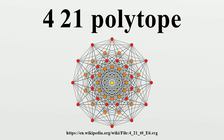This polytope is the vertex figure for a uniform tessellation of eight-dimensional space, represented by symbol 521 and its Coxeter-Dynkin diagram.